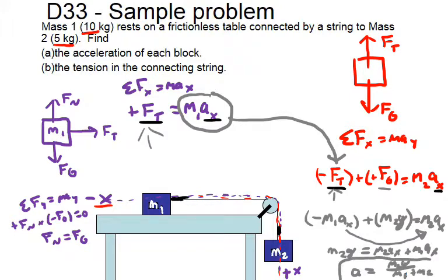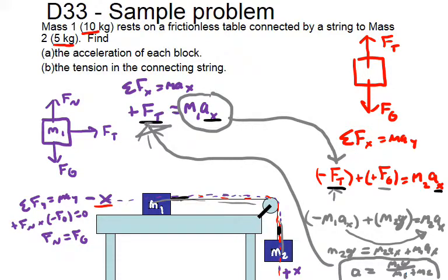We can factor out acceleration and divide both sides by m1 plus m2, giving us: acceleration equals m2g over (m1 plus m2). This gives us a way to calculate the acceleration of the system. Once we know the acceleration, we can substitute that value back into either equation to determine the force of tension. Go ahead and pause the clip and use the values — 10 kg for mass one, 5 kg for mass two — to solve for acceleration and tension.